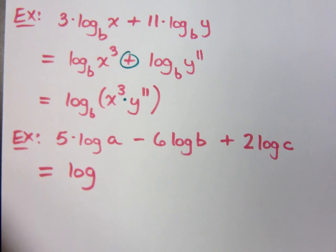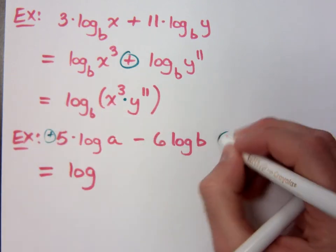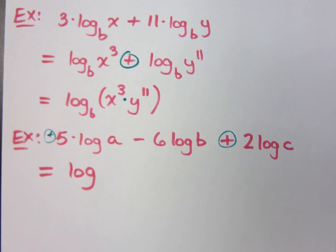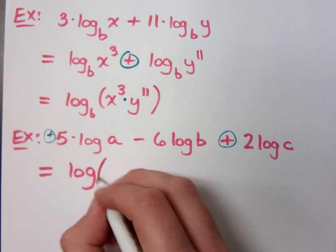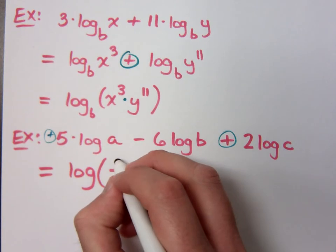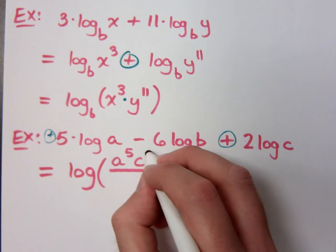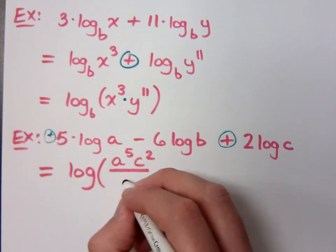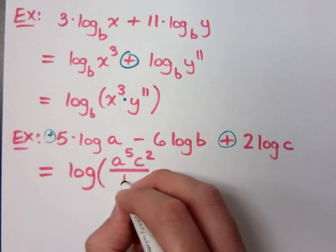Any of these guys that have a positive number up front, where are those guys going to go? They're going to go in the numerator, so what are they in the numerator? a to the 5th and c squared. What's in the denominator? b to the 6th.